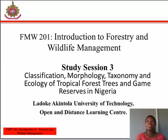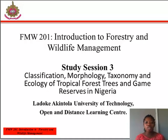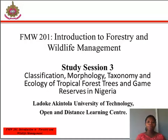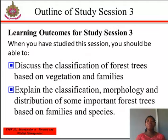The trunk — that is, the stem — is another external feature used for classification. The trunk is the portion of the tree used for timber, bole, and palm. The outer covering of the trunk is called the bark.